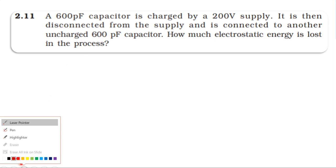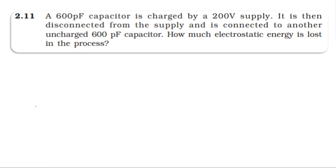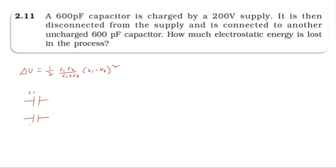Method one is the shortcut method using the direct formula. Loss in energy equals half into C1·C2 divided by (C1 plus C2) into (V1 minus V2) whole square. This is the loss in energy formula, where C1 is the first capacitor, C2 is the second capacitor, and V1, V2 are the respective potentials.